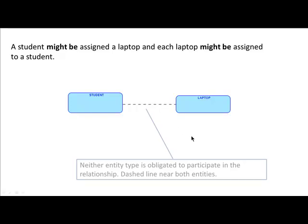When an entity type has non-obligatory participation in a relationship, we make the line dashed. If it has obligatory participation, we make that part of the line solid. So in the first example, neither entity type is obligated to participate — you may have students with no laptops and laptops not given to any student. Therefore, both halves of the line are dashed.